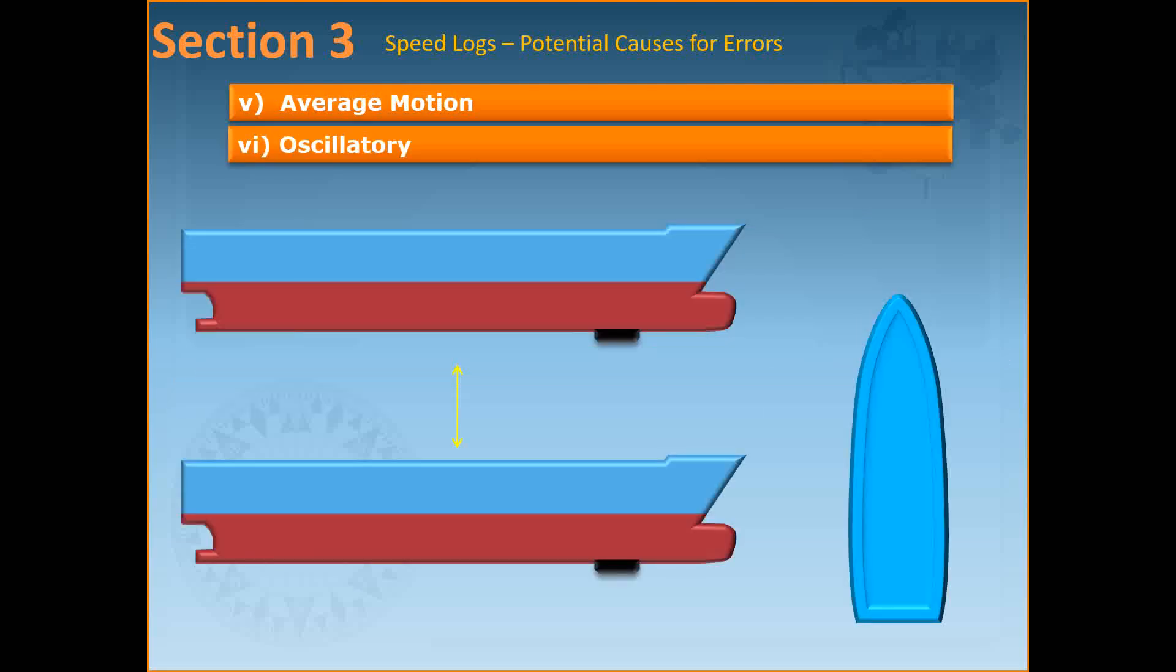The fifth one refers to average motion errors. The log is designed to measure speed along the track axis, that is the course and in the horizontal plane. If the ship's attitude deviates from these then a speed error is introduced. Movements such as trimming, pitching and yawing cause these errors but the effects are normally very small. Heave errors can be significant.